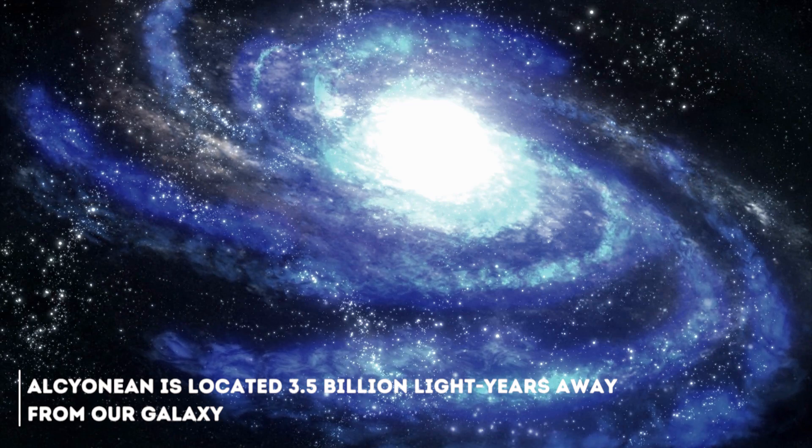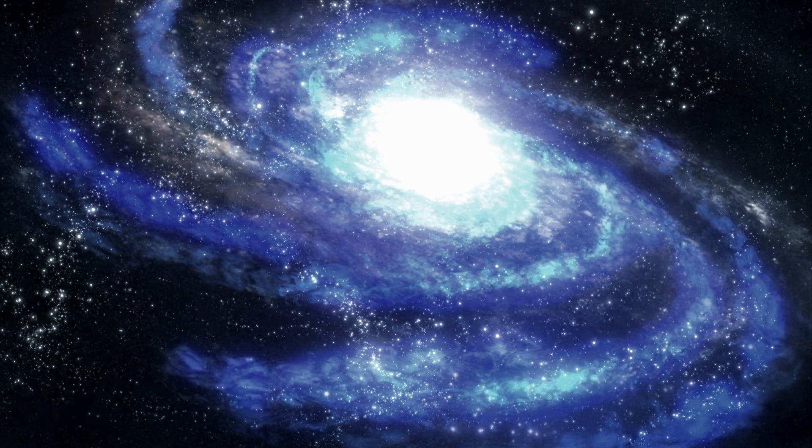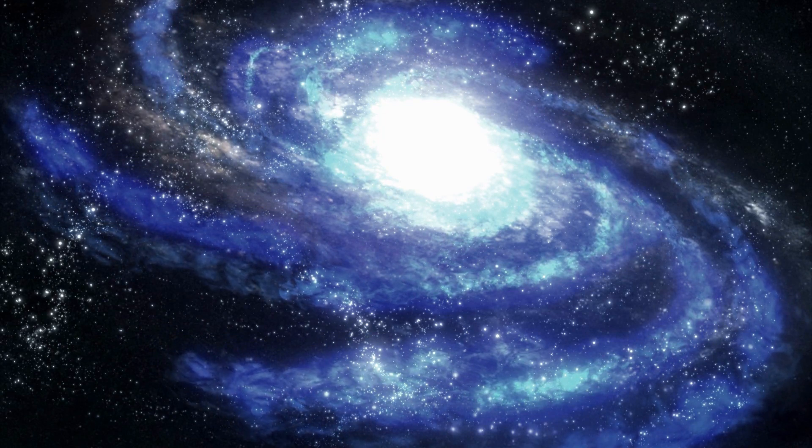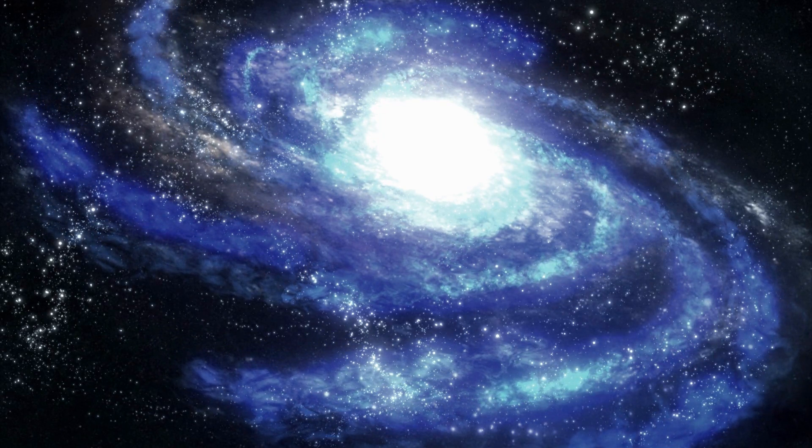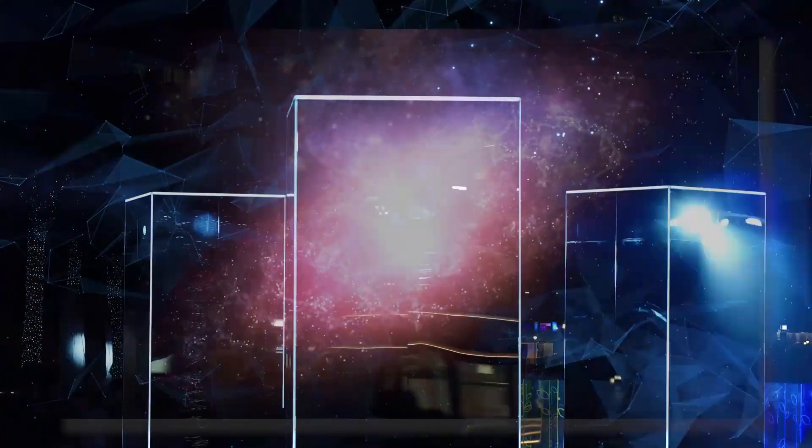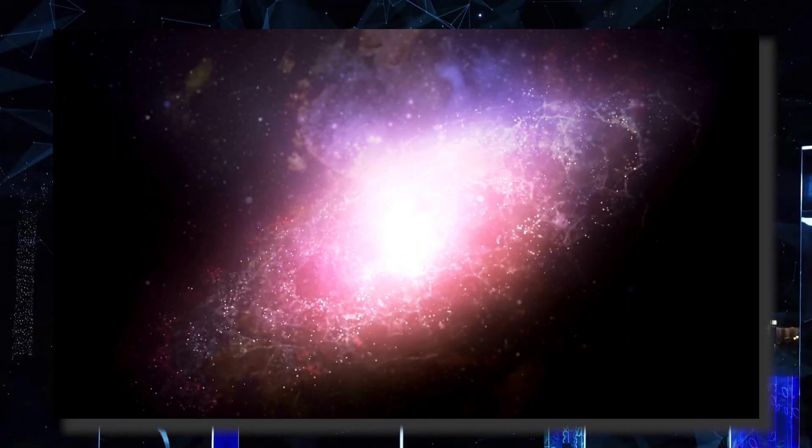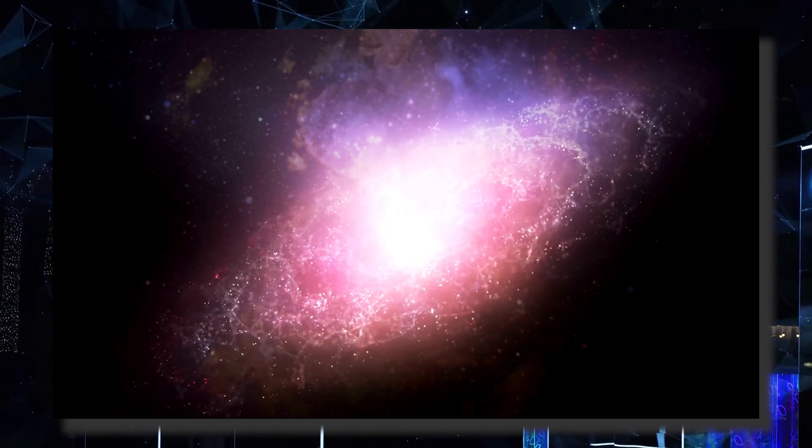Alcinean is located 3.5 billion light years away from our galaxy. According to several scientists, this galaxy is one of the strangest things ever found in our universe. The beginning of its history is complicated in itself. This massive and imposing galaxy was discovered by accident, in what has been catalogued as a great stroke of luck.